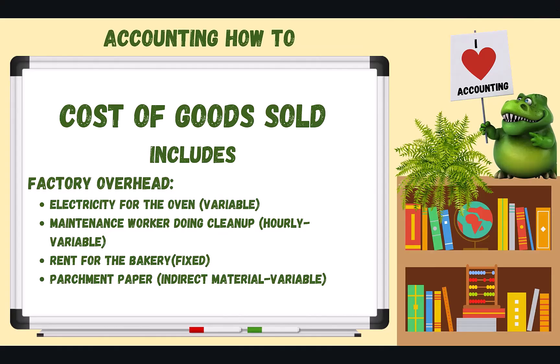Now let's separate those factory overhead costs and look at how they behave. Electricity for the oven is a variable cost — the more cakes we bake, the more electricity we use. The maintenance worker is hourly, so more cakes means more cleanup hours — that's also variable factory overhead. Rent on the bakery doesn't change based on units produced, so that's a fixed factory overhead cost. And parchment paper — the more cakes we bake, the more we use — so that indirect material is a variable cost.